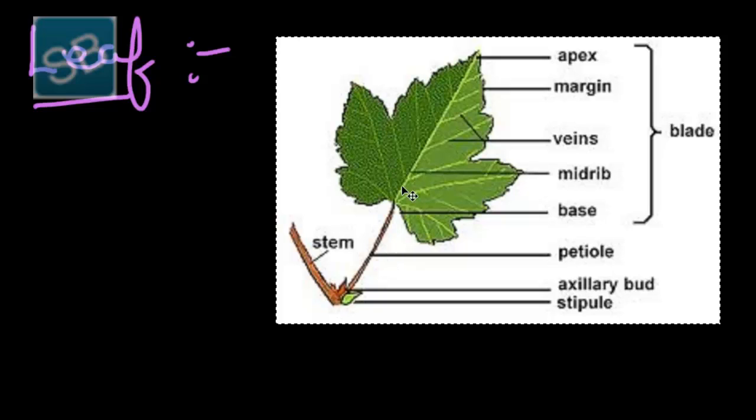There are basically three parts of a leaf: leaf base, lamina, and petiole.